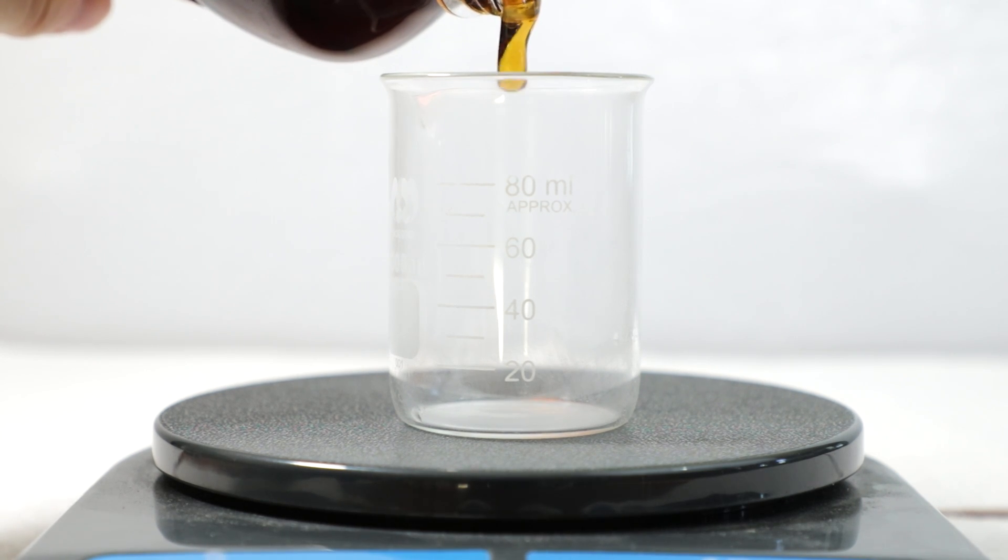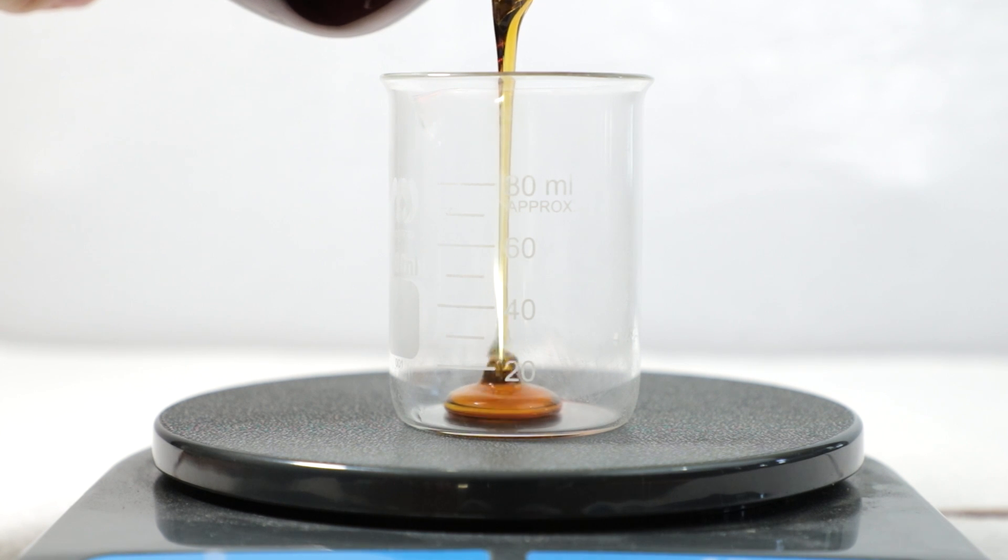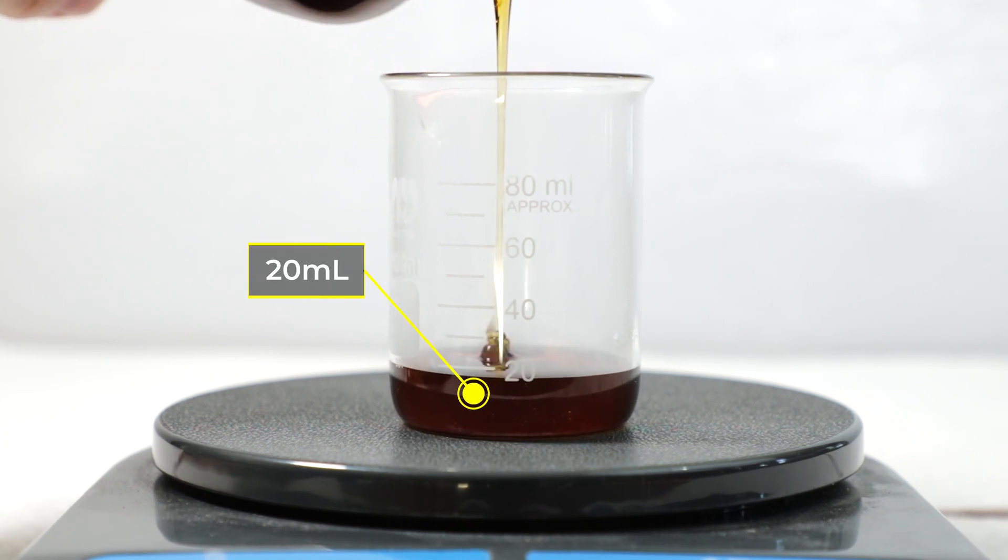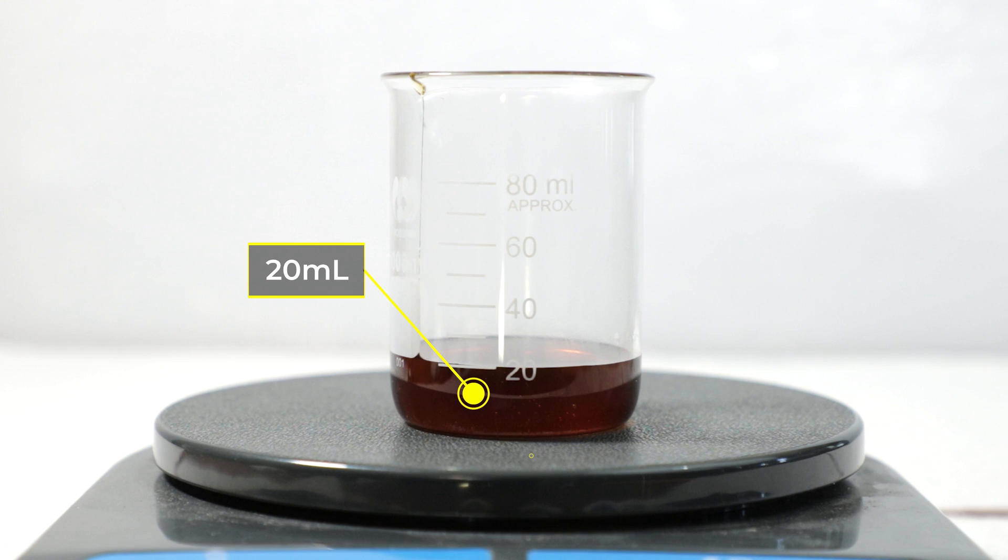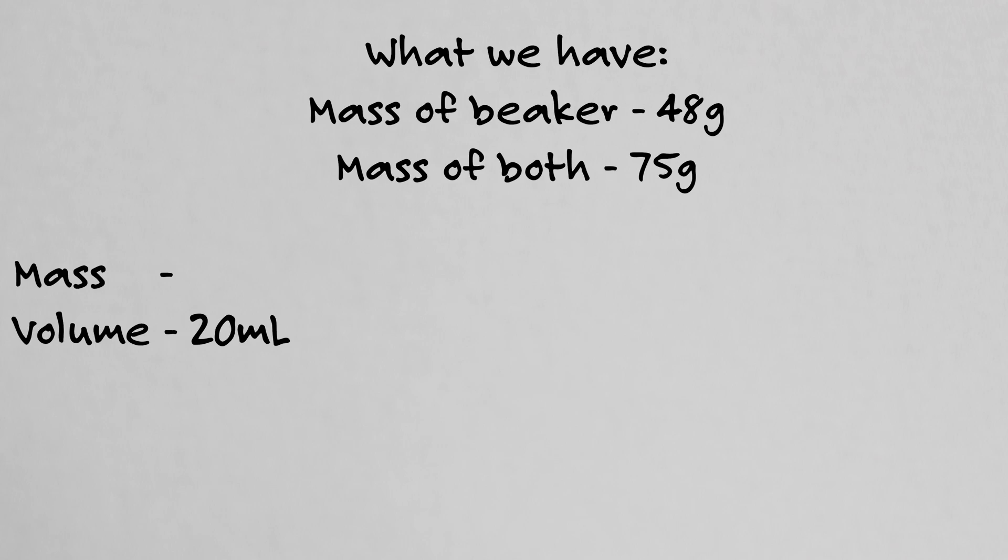Now I will measure out 20 milliliters of corn syrup. The scale gives us the total mass of corn syrup and the beaker. Time for some math. We subtract the mass of the beaker from the mass of the beaker containing corn syrup. We do not want the mass of the container in the calculation. So we subtract and that gives us a difference of 27 grams.